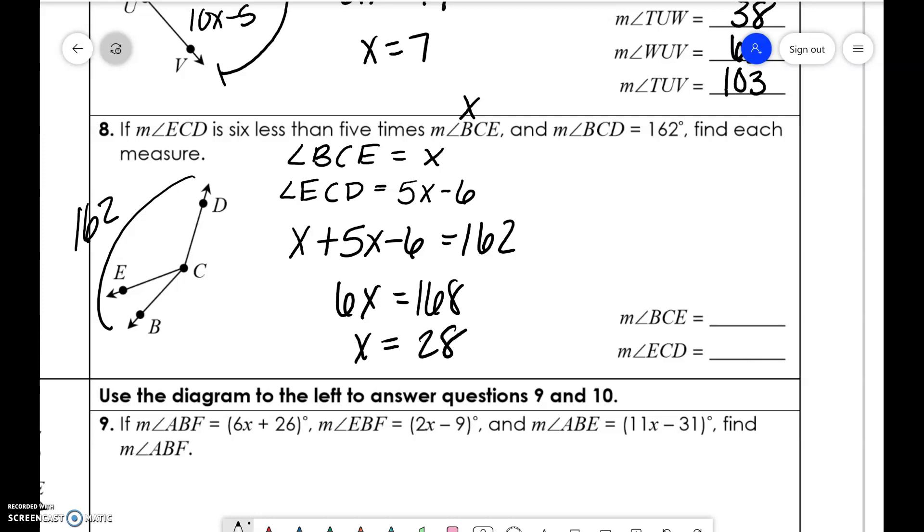Okay. So BEC, so it's just 28. And ECD is 5 times 28 minus 6, which is 134.